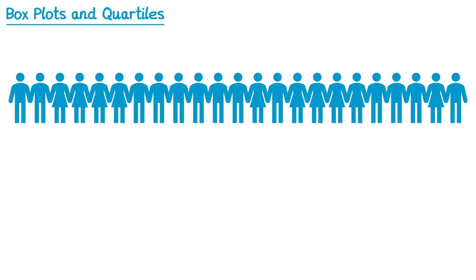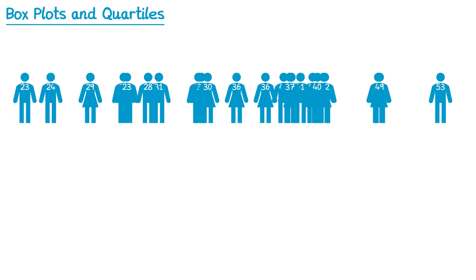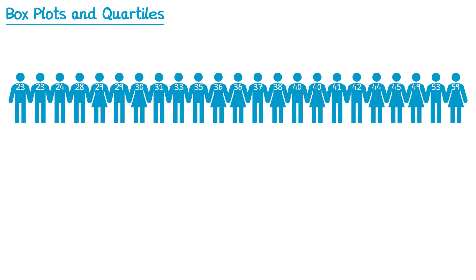Imagine we surveyed a group of adults and asked them how old they were. These were their ages. Then we reordered them so that the youngest person was on the left and the oldest person was on the right. You can see the youngest person in this list is 23 years and the oldest one is 59 years.